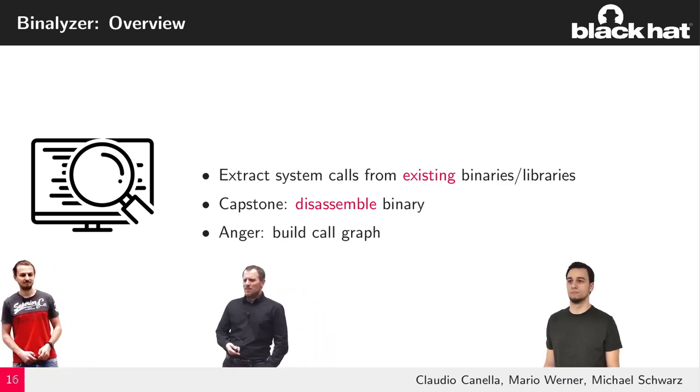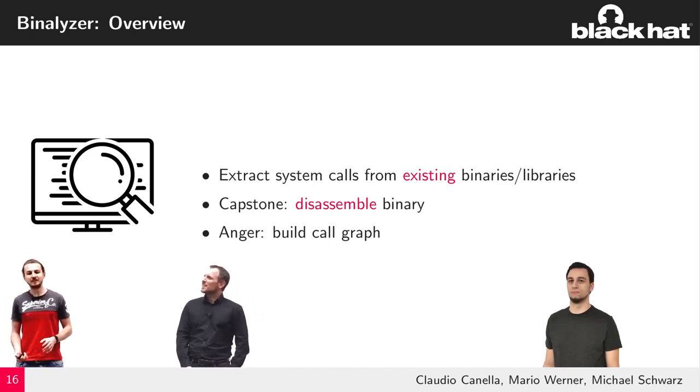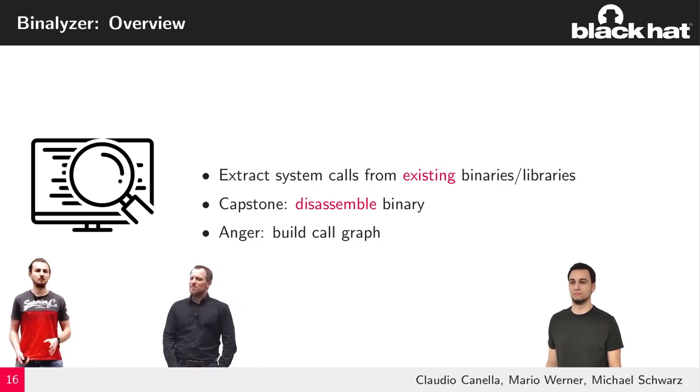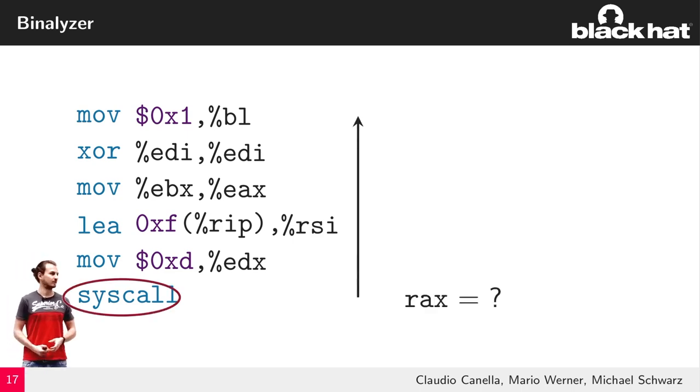We have the Binalyzer. It extracts the system calls from existing binaries or libraries. For that, it simply uses the capstone framework. It disassembles the binary so that we get all the assembly instructions and we can find the system calls there. Then we use the Angr tool to build a call graph again and extract the system calls that are actually needed for the binary. But Claudio, how does this work in detail? I mean, the syscalls, finding them sounds complicated. It is a little bit complicated. So let me briefly walk you through this. What we do is rely on symbolic backwards execution. We look through the disassembly binary until we find a system call instruction.